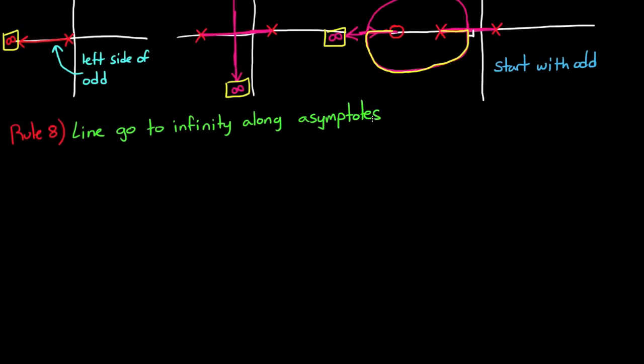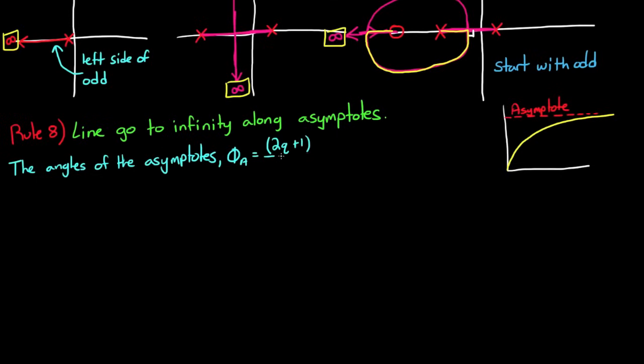Well, it just so happens that these lines go to infinity along asymptotes. And rule number eight describes what those asymptote angles are. Just a real quick reminder here, an asymptote of a curve is a line such that the distance between the curve and that line approach zero as they go towards infinity. All right, remember that we have as many asymptotes or lines going to or from infinity as there are unmatched pole zero pairs. And the angle of the asymptotes are dictated by this equation, where q are all of the integer numbers starting at zero and going up to just one less than the number of unmatched pairs.